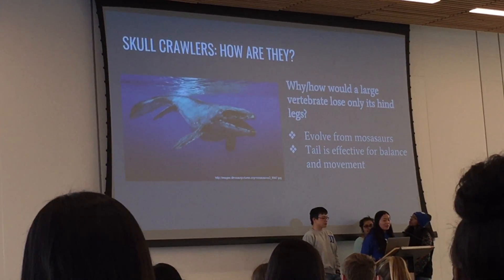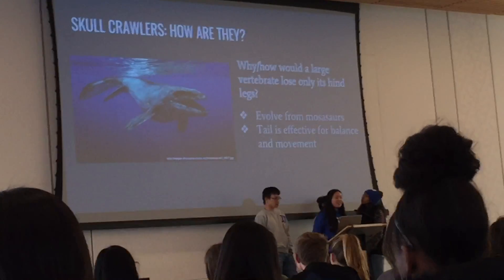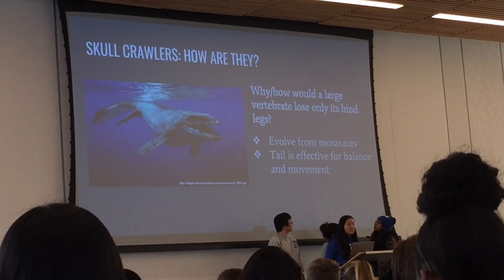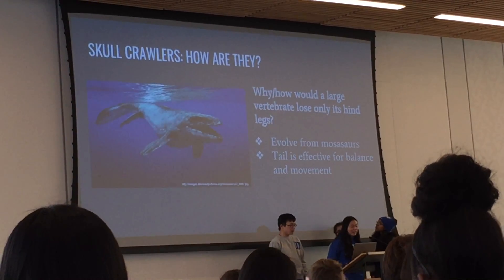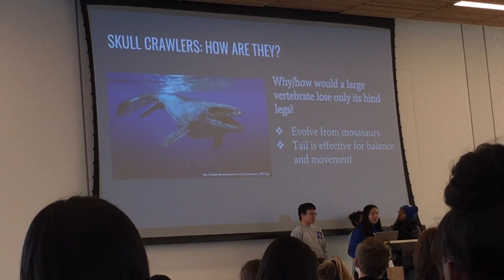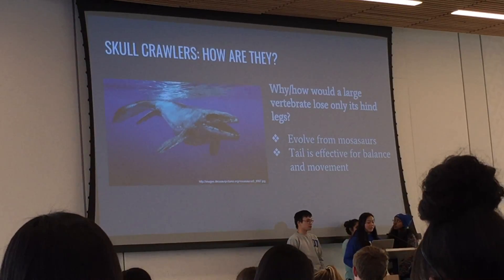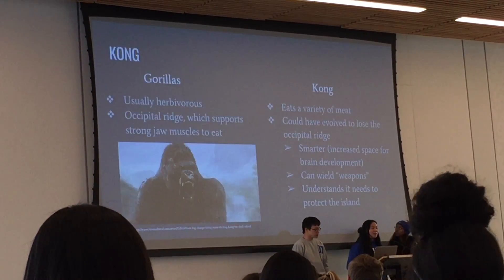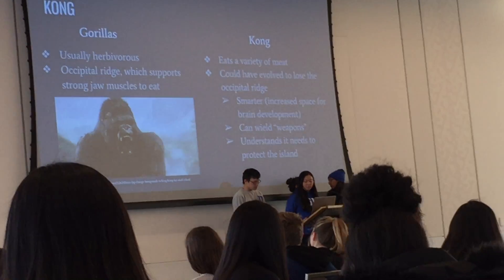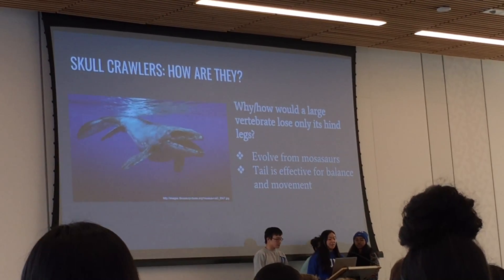Second question: why would they lose their hind legs but retain a tail? We found a prehistoric creature similar to the skull crawler — the mosasaur — which has a tail and some back flippers in the process of being lost through evolution. We think the skull crawlers may have evolved from mosasaurs. The tail may be useful for hunting underwater since underground resources may be insufficient, similarly to why they surface to hunt. The tail is also helpful for movement and catching prey.